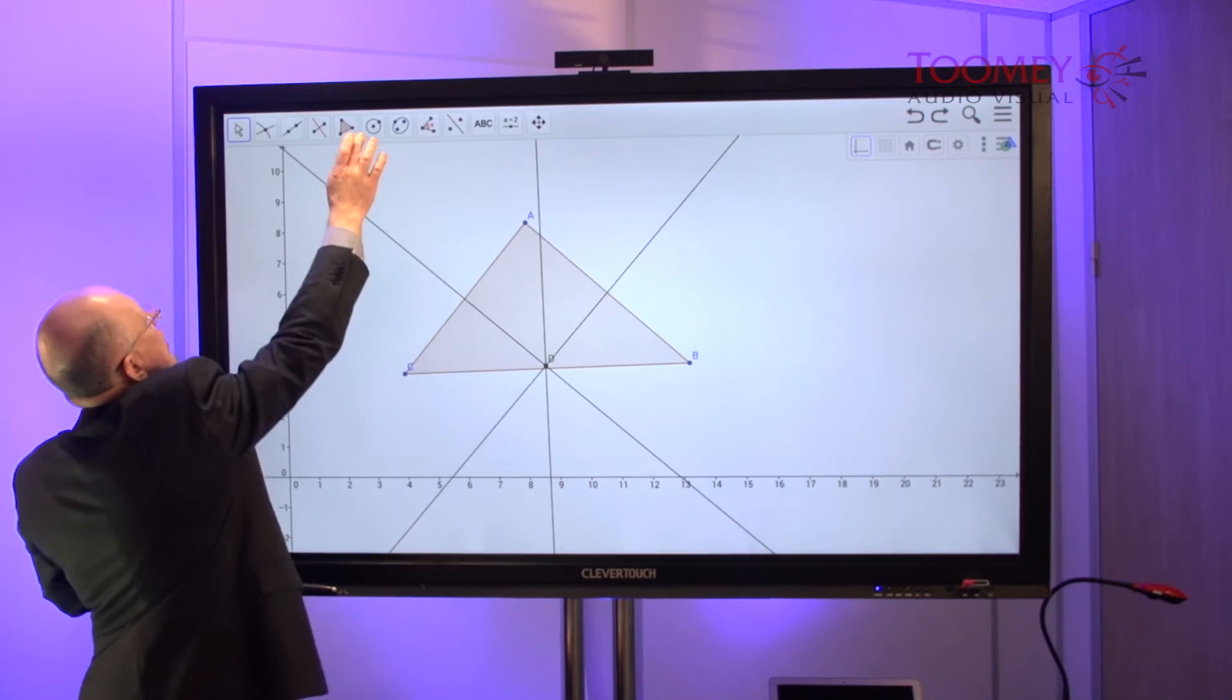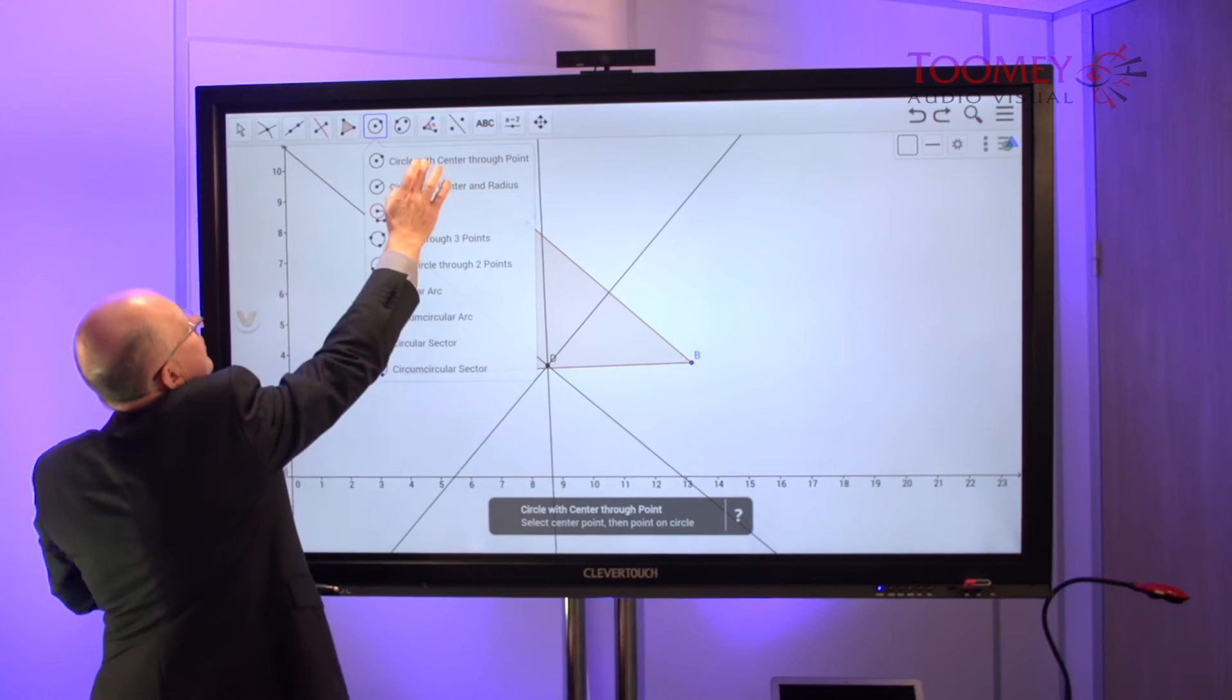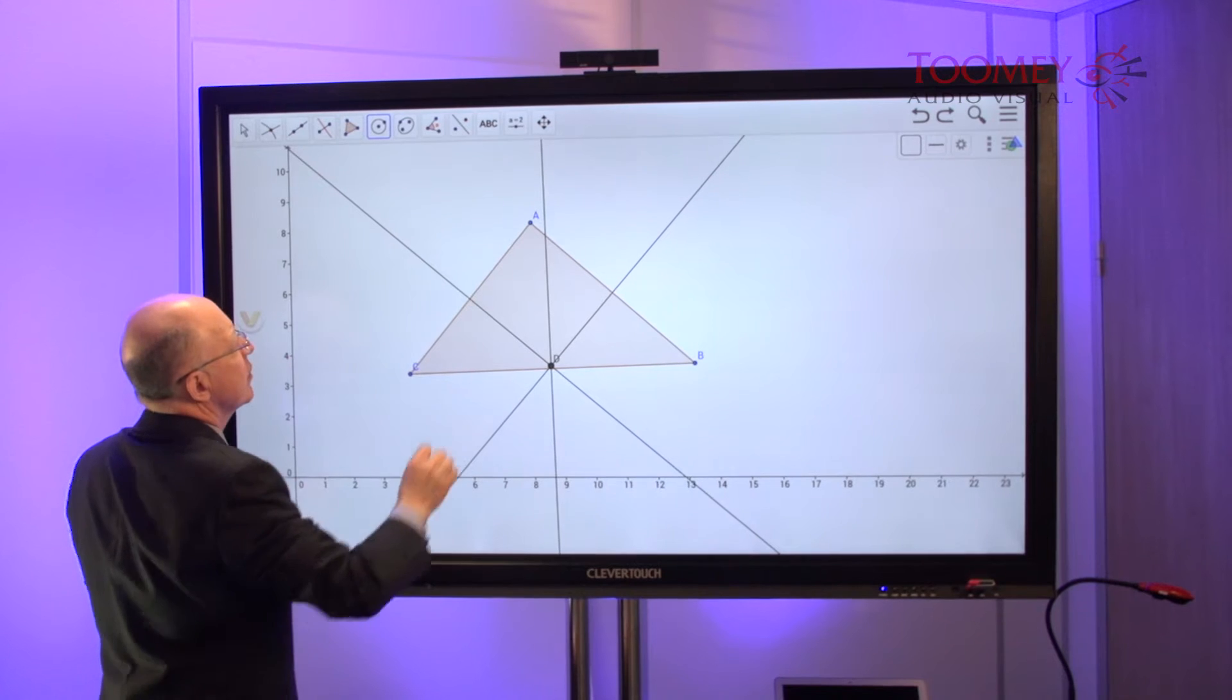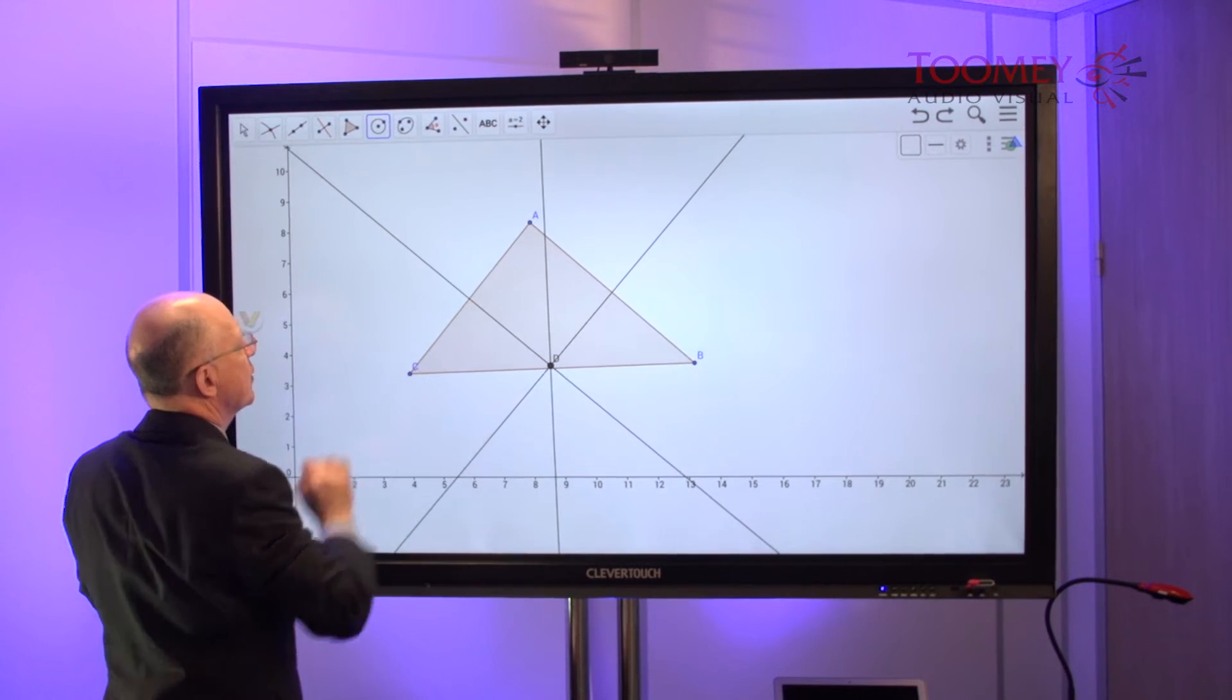Now we'll choose a circle centered through a point—centered on D through the point C, for example.